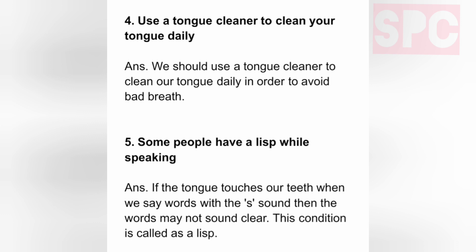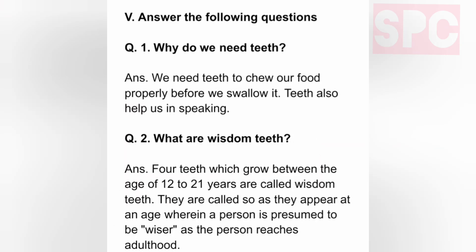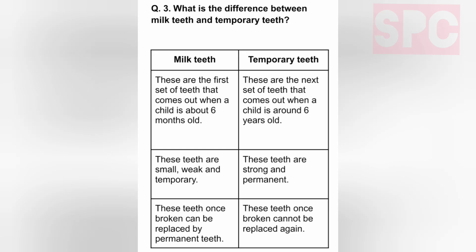Question 5 — Answer the following. Question 1: Why do we need teeth? Answer: We need teeth to chew our food properly before swallowing. Teeth also help us in speaking. Question 2: What are wisdom teeth? Answer: Four teeth which grow between the ages of 12 to 21 years are called wisdom teeth. They are called so because they appear at an age when a person is presumed to be wiser, as they reach adulthood.